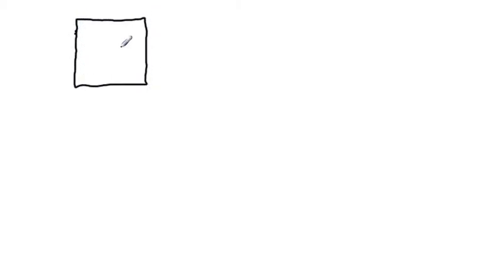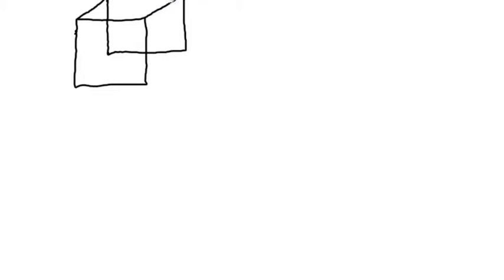One way to draw a cube is to go ahead and draw a square. Then find the exact center of the square, put a dot, and make that the bottom left corner of a second square. Draw that second square, then connect each corner — top left to top left, top right to top right, and so on — until you have a cube.